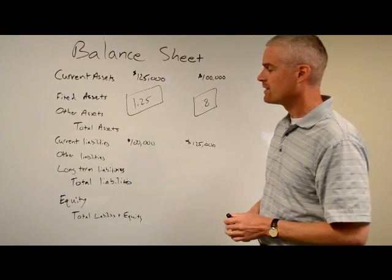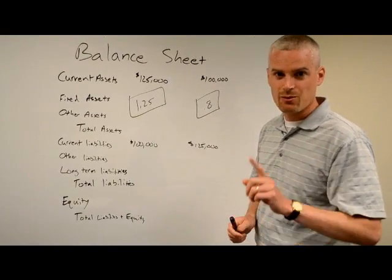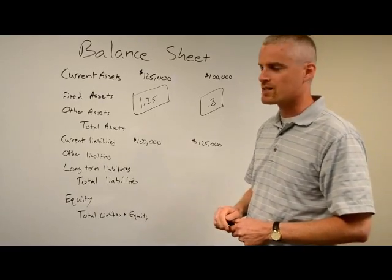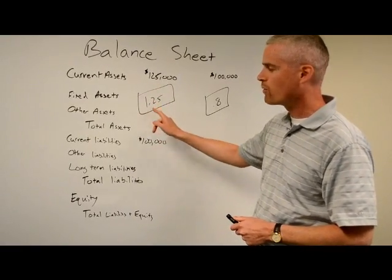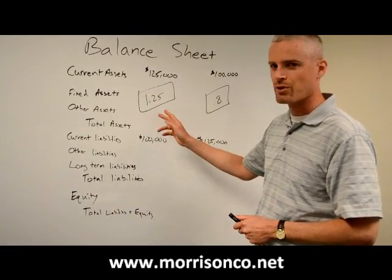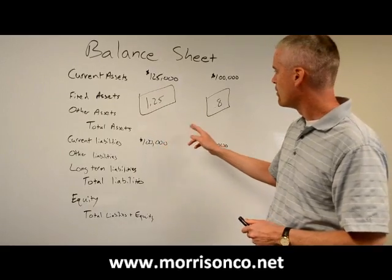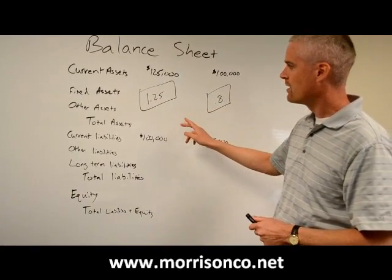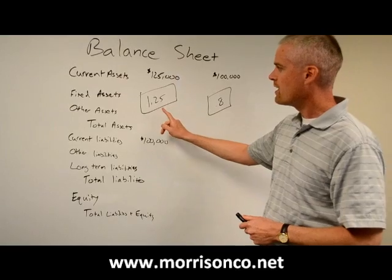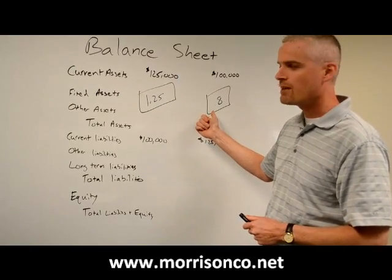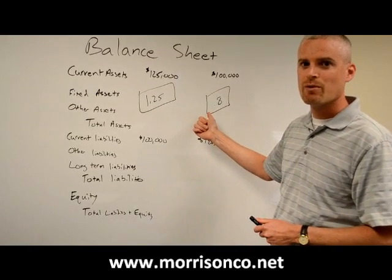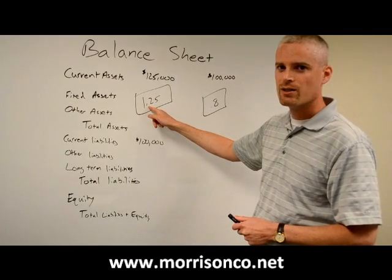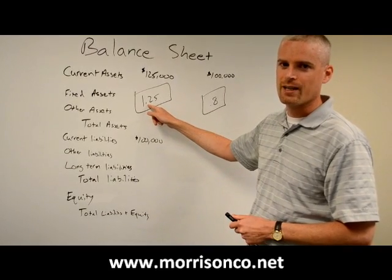What does that mean? The standard is 1. Anything greater than 1 is a positive number — in this situation it's 1.25, that's pretty good. Over here it's less than 1, 0.8 — not so good. If your ratio is less than 1, it means you're going to have trouble paying your bills in the next year. If your ratio is higher than 1, you'll be just fine in the next year.